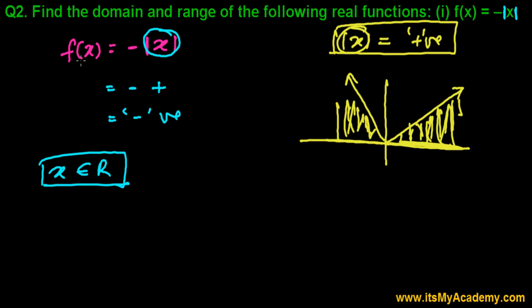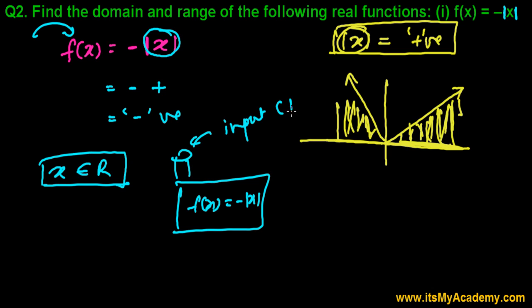Then that time, like what you're going to put, the thing that we're going to put in machine, like this is a function. f(x) equals to minus |x|. This is a function. So what we're going to put here, the input, what is our input?